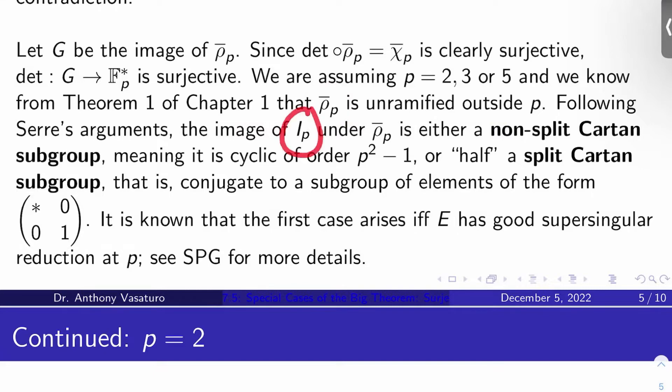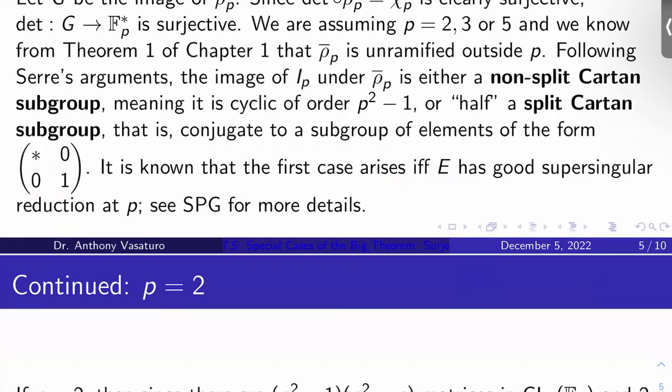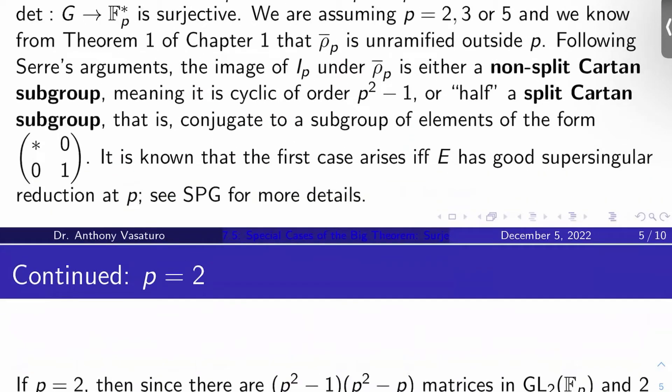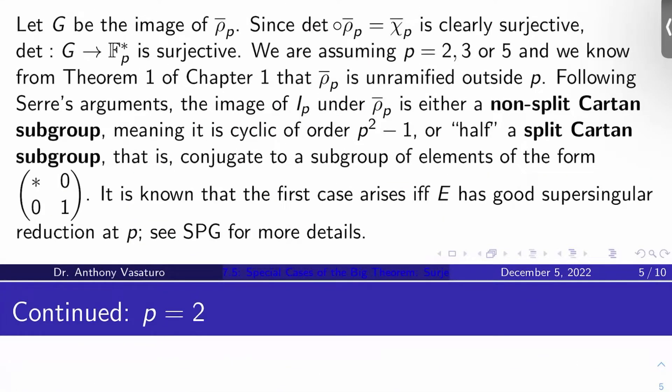And then used a couple of times in this proof, following Serre's argument, we know that the image of inertia at P under rho P bar is either a non-split Cartan, meaning it's cyclic of order P squared minus one, or it's so-called half a split Cartan, meaning it's conjugate to a subgroup of elements of the form star zero, zero one. As a fun fact, the first case arises if and only if E has what we call good supersingular reduction at P. So I'm going to split it into three cases: P is 2, P is 3, or P is 5, and I'm going to get a contradiction in any case.